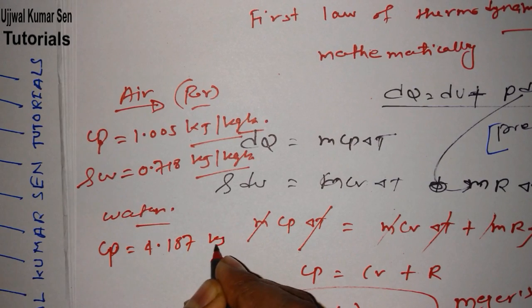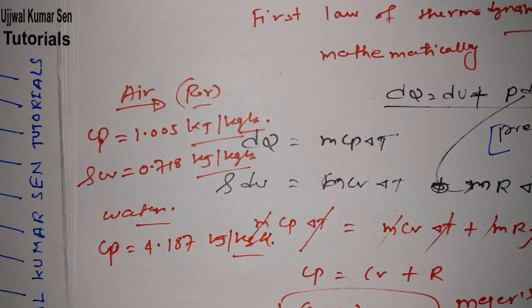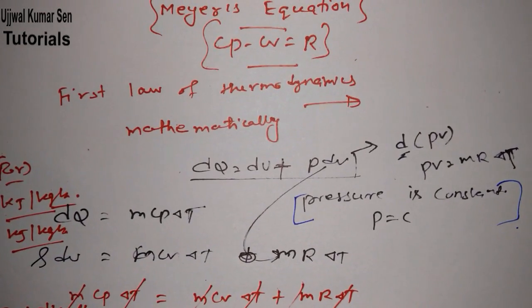For water, Cp is equal to 4.187 kilojoule per kg kelvin. So this is all about Mayer's equation and important things you need to know about it.